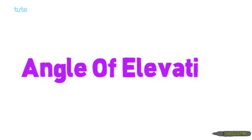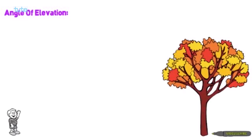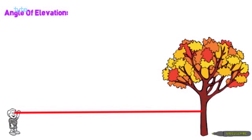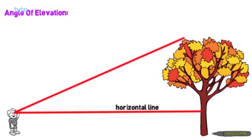Now let's see what is meant by the angle of elevation. Consider a boy standing on the ground at a certain distance from a tree. This gives his horizontal level. The boy is watching the top of the tree, which gives the line of sight. These two lines make a particular angle, and that angle is called the angle of elevation.